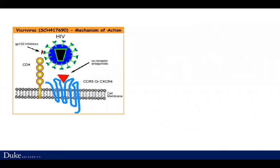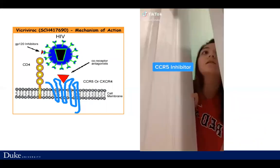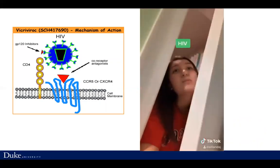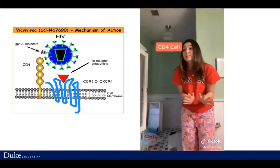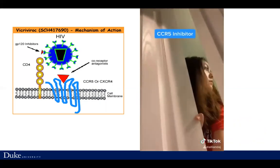Much earlier in the semester, we had studied antiretroviral drugs, and the red triangle in this diagram is an inhibitor for one of the co-receptors of HIV, so it can't get into a T-cell. A student created a TikTok which is silly but explains something. Here is a student sitting in her room with a camera, looking at her door, and thinking that door functions like a synthetic chemical that binds to a receptor to keep a virus out of a cell — that door is functioning like a blockage to a receptor. A short, silly video, but a lot of thinking had to go into that.